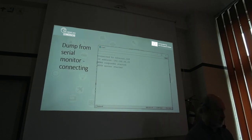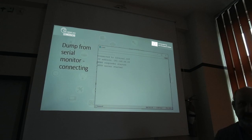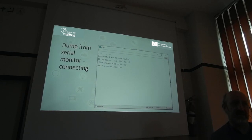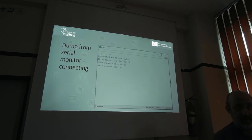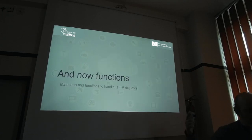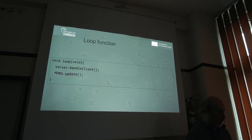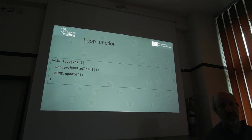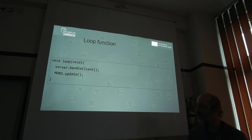On the serial monitor, you can see the dots during connection, then the information that our ESP8266 has been connected to the internal IoT network with the specified IP address, that MDNS responder has started, and that the server is started. In the loop function, server.handleClient() and MDNS.update() are called — these two functions are needed for our server to work properly.